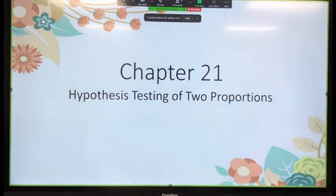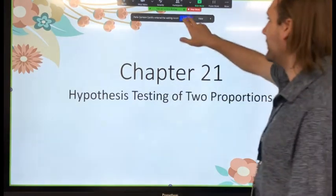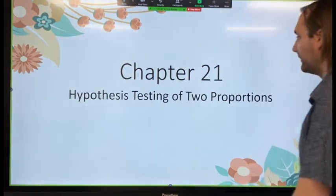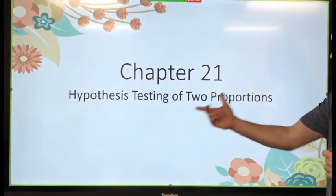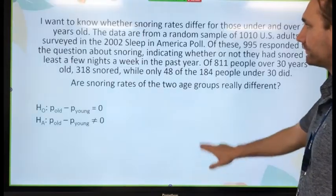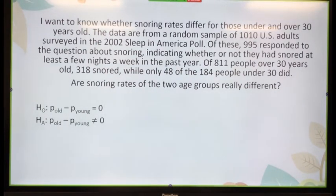We had looked at hypothesis testing — we spent probably an entire month on it. We did it with just one proportion. Now since we're talking about two proportions, let's do hypothesis testing with two proportions. I want to know whether snoring rates differ between those under and over 30 years old.